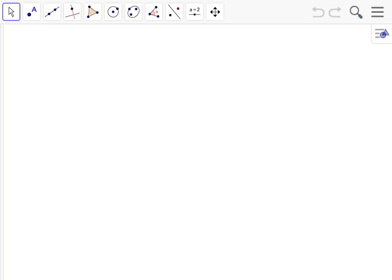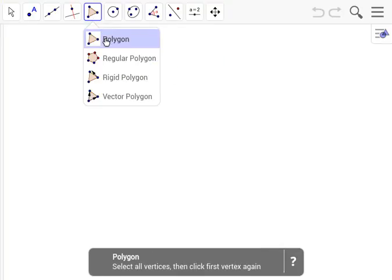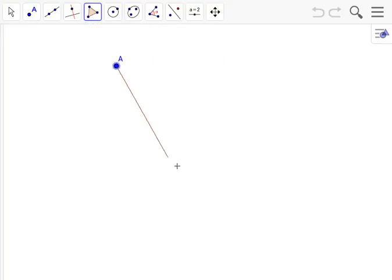Hey guys, so back again. Today we're going to make a circumcenter for an obtuse triangle. So let's get going with this. We have to make the triangle, so let's make one like this.